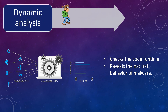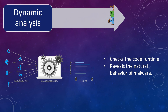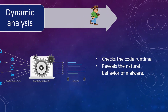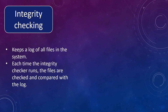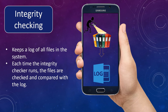Dynamic analysis runs the application in a different environment and tracks its execution behavior. It can reveal the natural behavior of malware when executed code is analyzed, and therefore is not affected by obfuscation attempts. Integrity checking is a technology that keeps a log of all files existing in the system. The log may contain characteristics of files such as file size, timestamp, and checksum. Each time the integrity checker runs, the files on the system are checked and compared with previously saved characteristics.